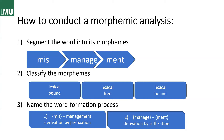Now that we know this, we can go on to figure out the word formation processes. In this case, there are two, because we have three morphemes. My first step would be to cleave off the 'mis-,' so we have 'management' as a lexeme and 'mis-.'